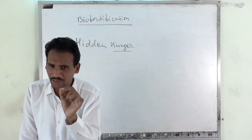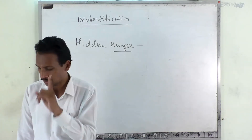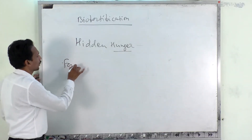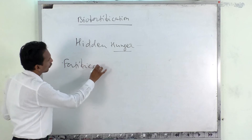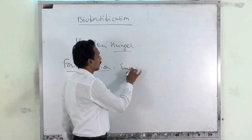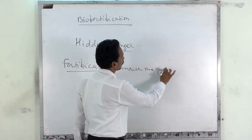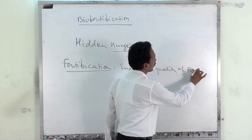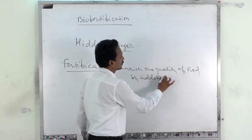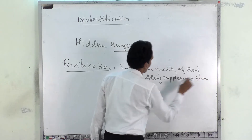To overcome this, we need to enrich our food quality. There are two different ways to do this. One way is called fortification — fortification is where you increase the quality of food by adding supplements from the outer side.